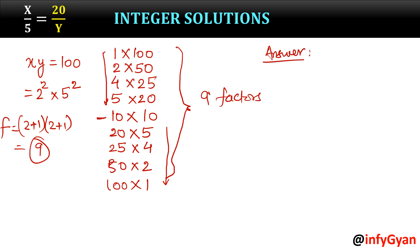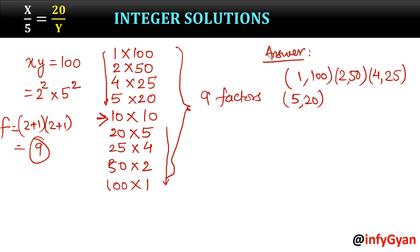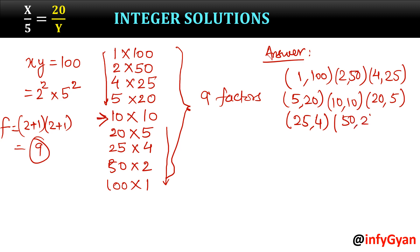So 9 factors are there for positive numbers. The positive ordered pairs are: (1, 100), (2, 50), (4, 25), (5, 20), (10, 10), (20, 5), (25, 4), (50, 2), and (100, 1). You can gradually increase the first number to the midpoint, then write the reverse order.